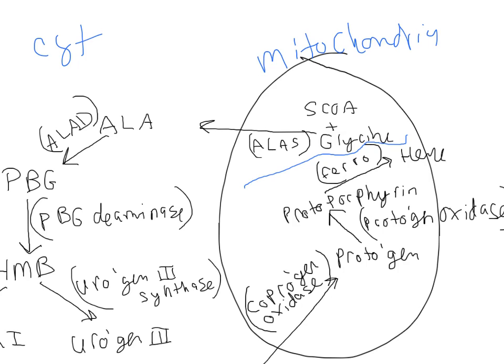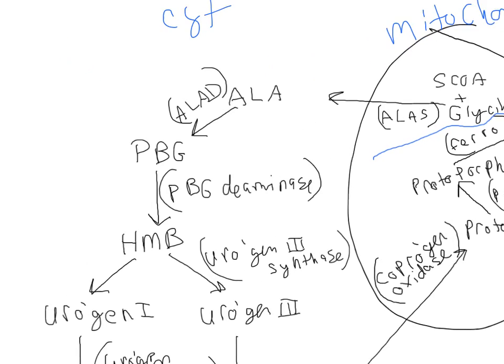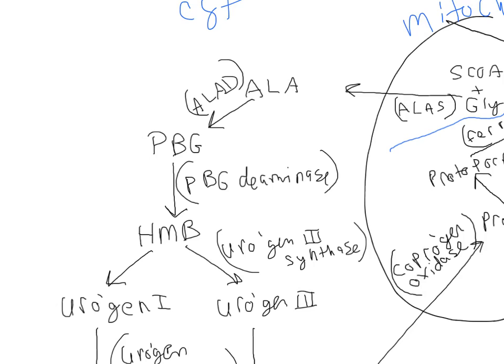Once these are combined to form amino-levulinic acid, they are acted upon by ALAD, which is amino-levulinic acid dehydratase. Amino-levulinic acid dehydratase, or ALAD, forms PBG, or porphobilinogen. From ALAS, we can get X-linked sideroblastic anemia. And ALAD — the heavy metal lead acts on it to produce a lead-induced sideroblastic anemia.